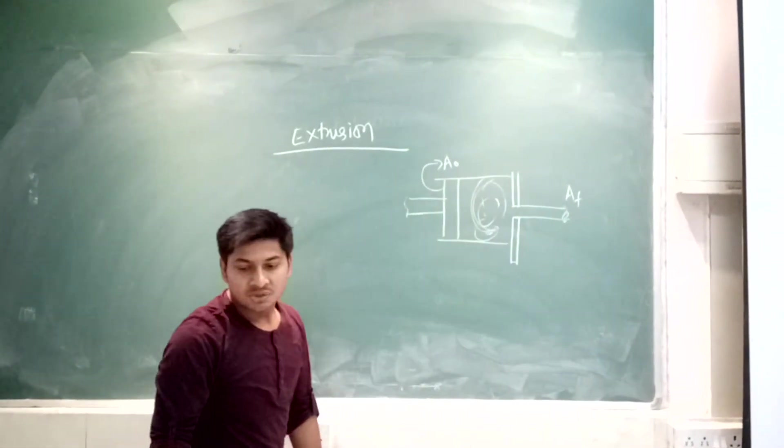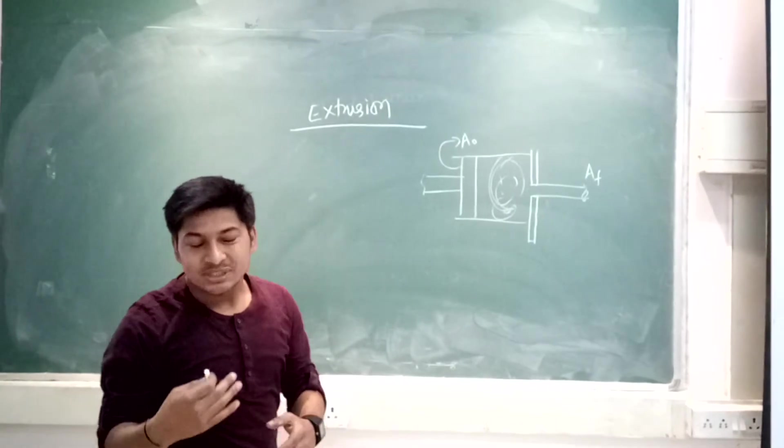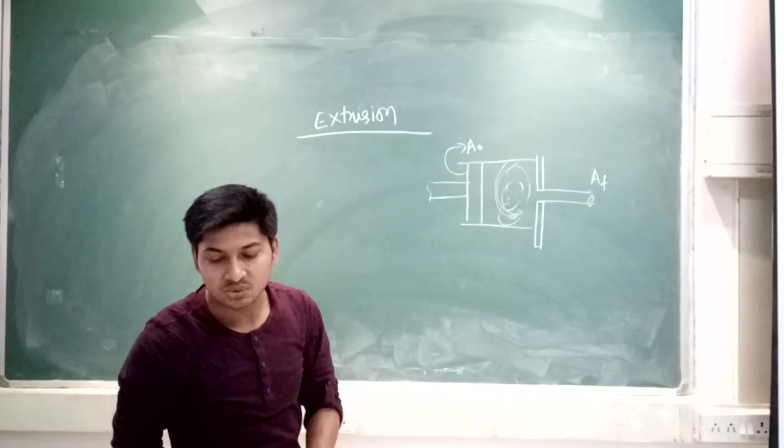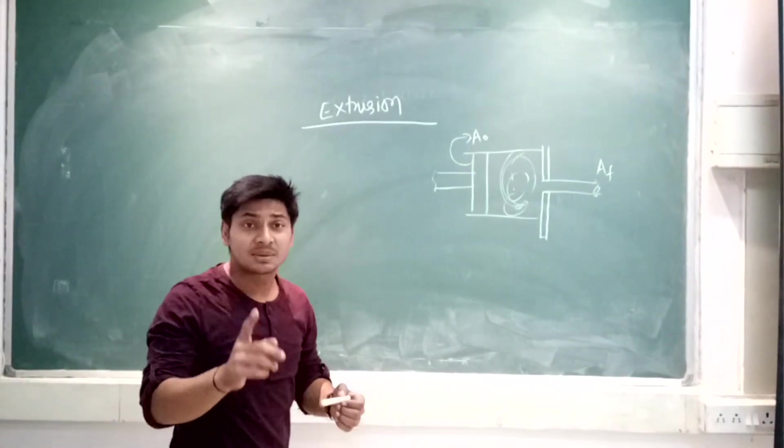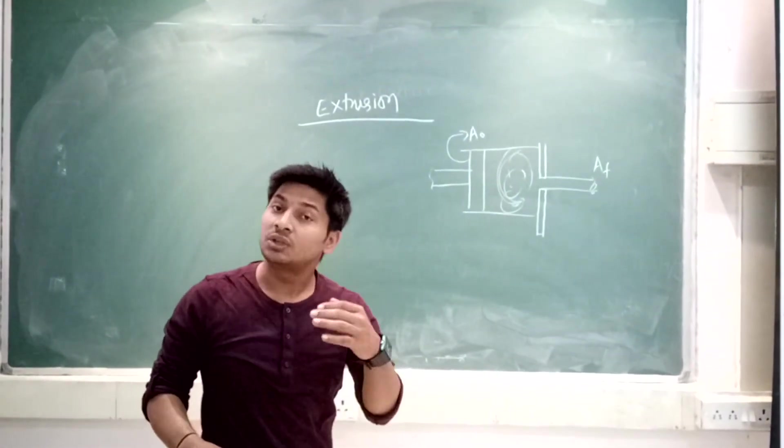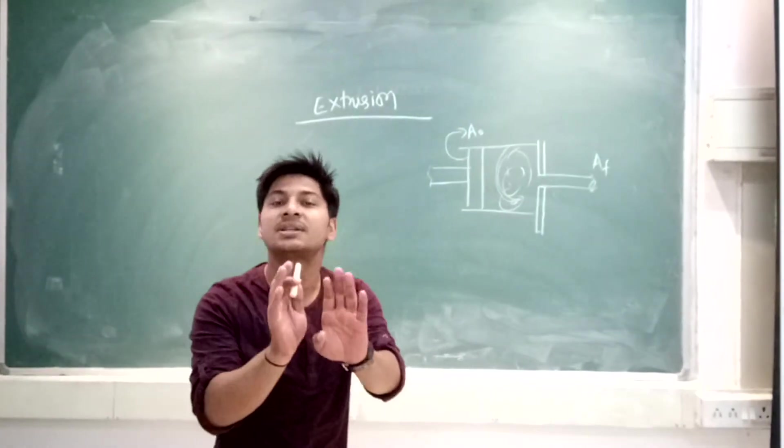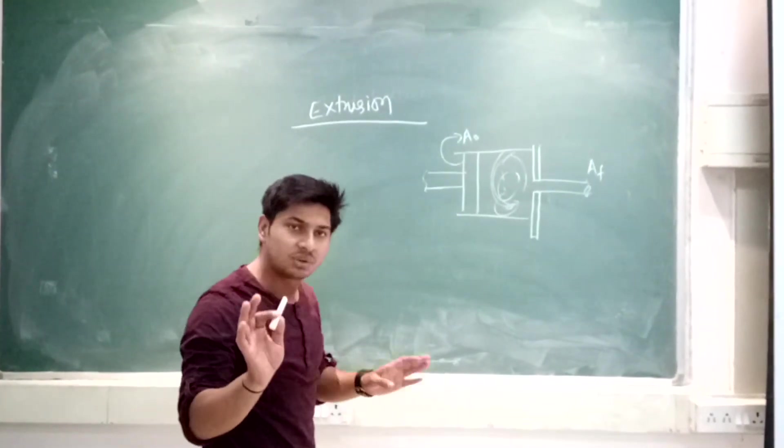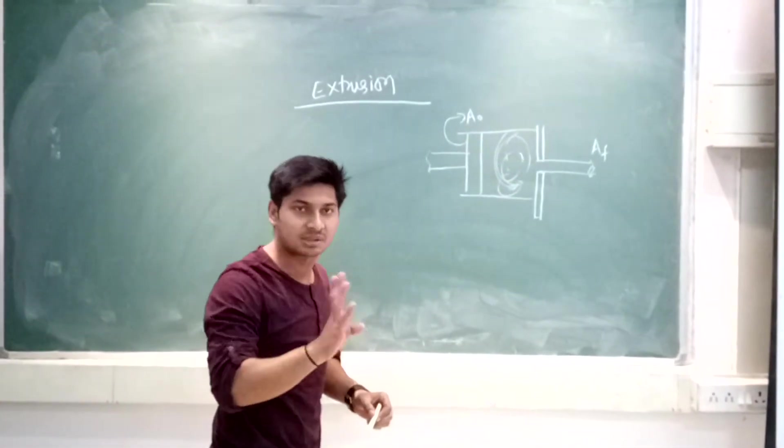So squeezing of toothpaste - you know when you squeeze the toothpaste, that is an example of extrusion process. One assumption: unit deformation is uniform and friction is absent. You have to keep in mind that friction will be absent and deformation will be uniform. This is the assumption in extrusion.